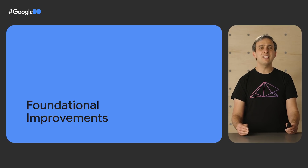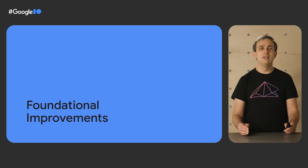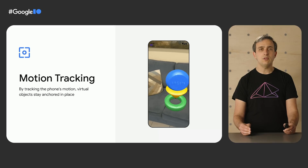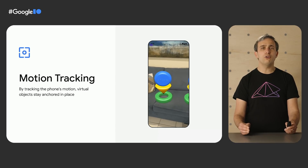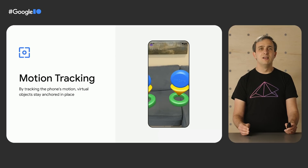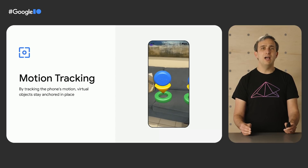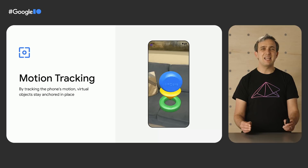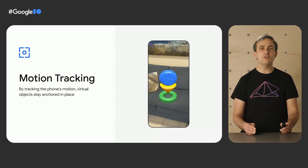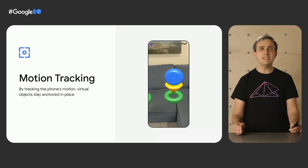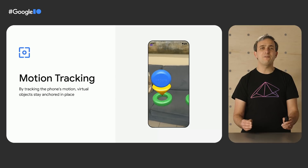A key request we consistently hear from app developers using ARCore is that they want the core capabilities that let objects feel real to be faster and more reliable. In the real world, objects don't glitch in and out of existence when you turn your head, and users expect the same from virtual objects in AR. Motion tracking is core to enabling immersion in AR experiences. By tracking how the phone moves through the world and where the floor, tables, and walls are, an app can place virtual objects on those surfaces and have them stay anchored in place. The virtual objects need to always be drawn appropriately, even as the phone moves around, so that they feel as if they're actually part of the world.